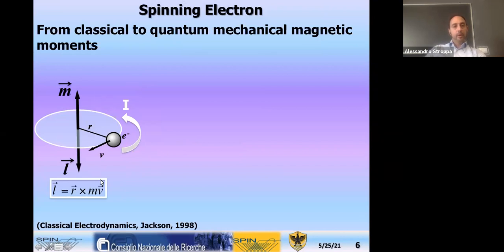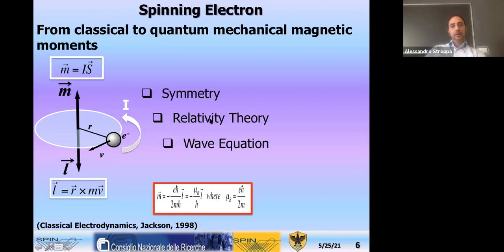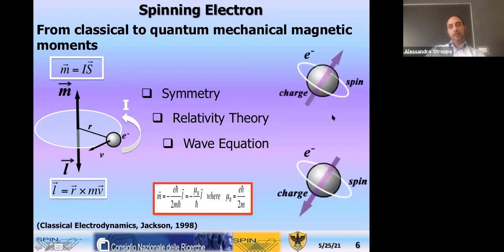Einstein noted that Maxwell's theory was already in agreement with the relativity principle and the constant velocity of light, and it can already be recast in covariant formalism. At the time of Maxwell, Boltzmann was so impressed he commented: 'Was it God who wrote these symbols?' The next milestone is the quantum jump in physics — the years 1925 to 1928, with the development of quantum mechanics and the idea of the spinning electron.